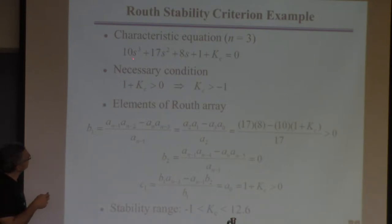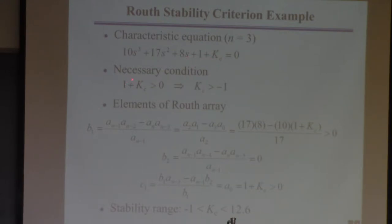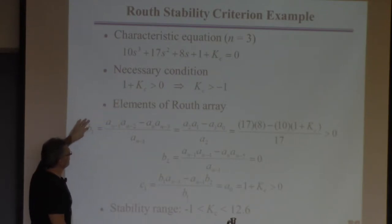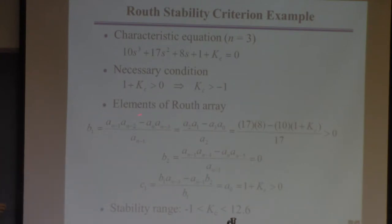So the first thing: is that leading coefficient positive? Yes, 10 is positive. Now check every coefficient: 10 — check; 17 — check; 8 — check; 1 plus Kc. One condition is that 1 + Kc must be greater than 0, meaning Kc must be greater than minus 1. If Kc is not greater than minus 1, that A0 term is negative and the system is not stable. So there's one bound. This is a third-order polynomial, so I only have to compute B1. Here n = 3, so this becomes A2 = 17, A1 = 8, A3 = 10, and A0 = 1 + Kc divided by A2 = 17.